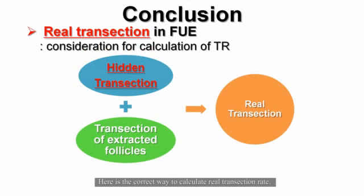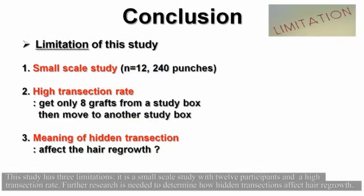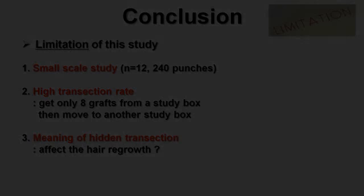Here is the correct way to calculate the real transection rate. This study has three limitations: it is a small scale study with 12 participants and a high transection rate. Further research is needed to determine how hidden transection affects hair regrowth. Thank you.